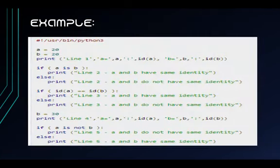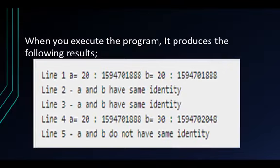Now for an example, let's assume that variable A equals 20 and variable B also equals 20. Using the code, we will evaluate if variable A has the same identity as variable B, or if variable B does not have the same identity as variable A. Using the code, the program produces the following results.